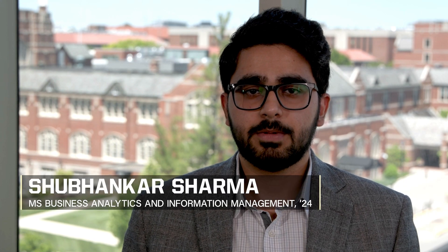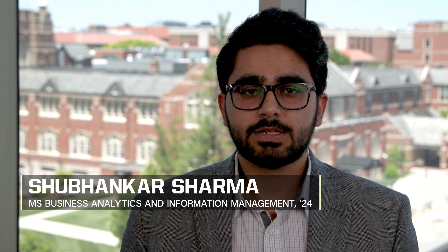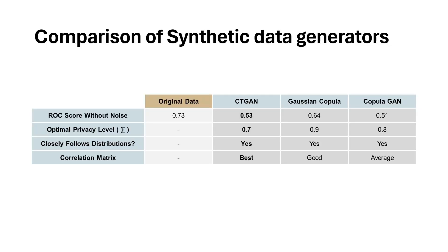We've completed our modeling and experiments. Now let's review the results. The baseline data had an ROC score of 0.73. Compared to it, the CTGAN model scored 0.53, balancing privacy with a 0.7 epsilon level, closely mimicking the original data's distributions, making it our preferred choice.